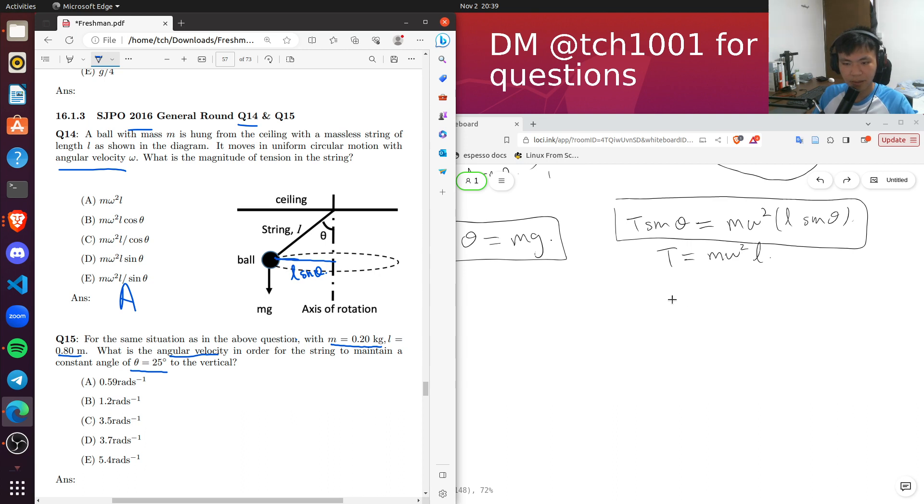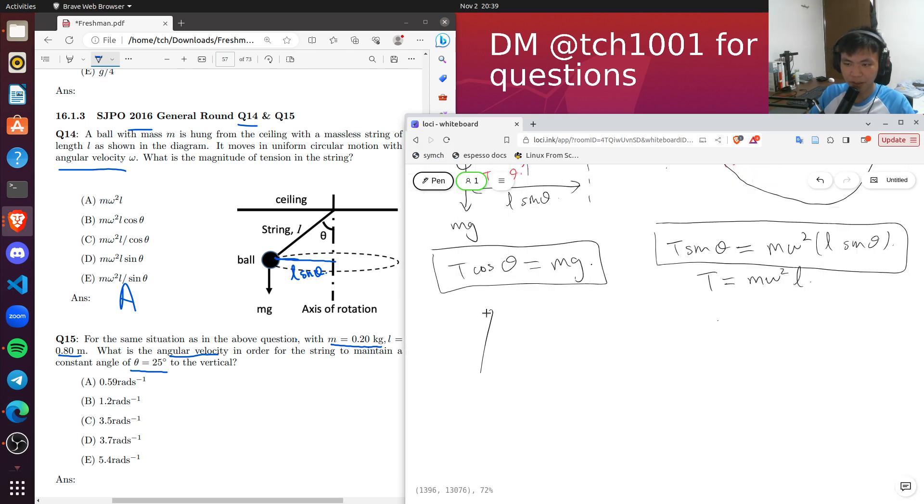And in this case, we see that we actually need to use the equation over here now, because we have m, we have l, but we don't have omega.